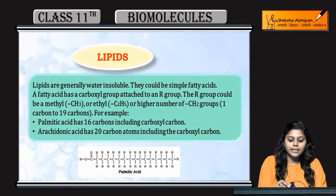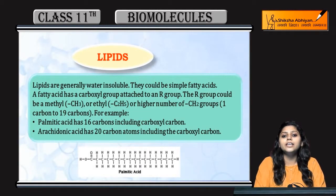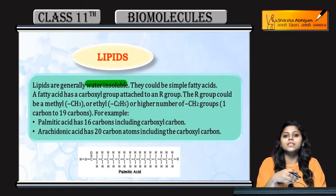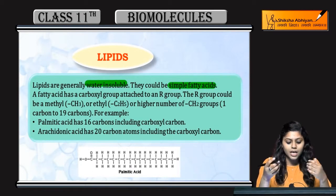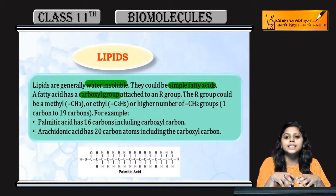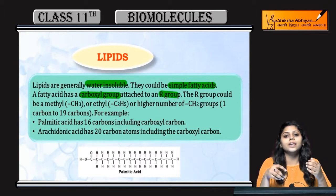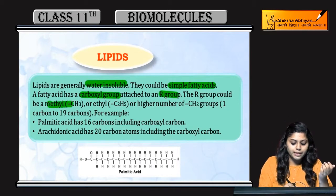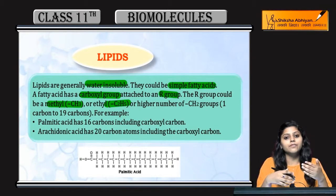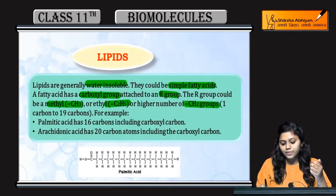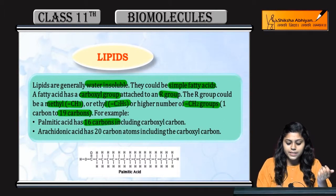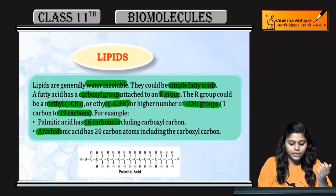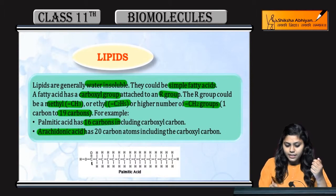Coming to the next topic - lipids. Lipids kaya hoote hai, they are water insoluble, means water mein nahi ghulte hai. They could be simply fatty acids - acids means carboxyl group present, kis ke saad R group attach hoga. That R group could be methyl or ethyl, ya phir higher carbon compounds ho sakti hain, 1 to 19 carbon ho sakti hain. That could be palmitic acid jis me 16 carbons hootay hain, and arachidonic acid jis me 20 carbons hootay hain.